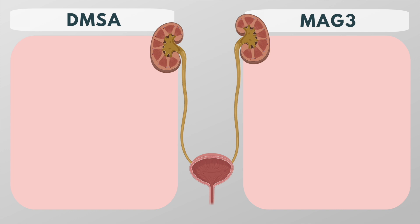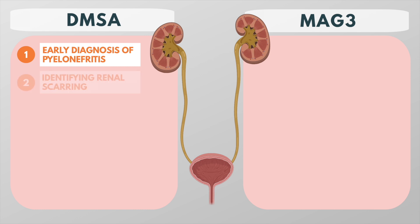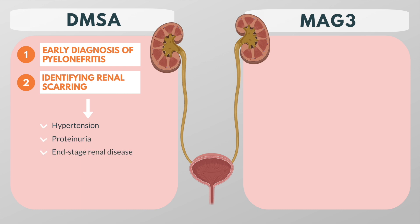DMSA is mainly used for the early diagnosis of pyelonephritis in children or for identifying renal scarring after recurrent urinary tract infections. If left untreated, renal scarring may lead to hypertension, proteinuria, and end-stage renal disease.